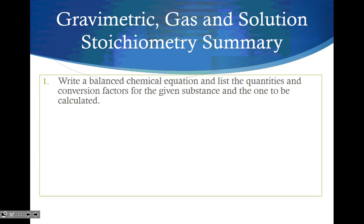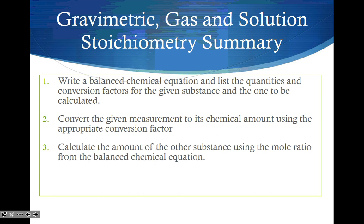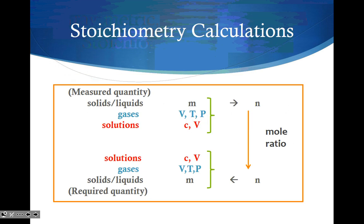So let's summarize. In order to do any of the stoic, you have to write a balanced chemical equation and list the quantities and conversion factors for the given substances and the one to be calculated. Convert the given measurements to its chemical amount, that number of moles, using the appropriate conversion factor. Calculate the amount of other substances using the molar ratio from the balanced chemical equation. And convert the calculated chemical amount to find the quantity requested using the appropriate conversion factor. And remember to use ideal gas law for all gases, not STP or SATP.